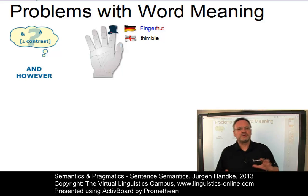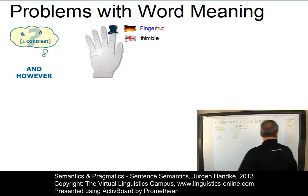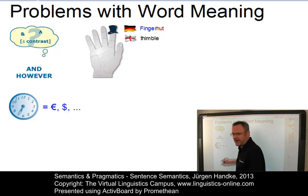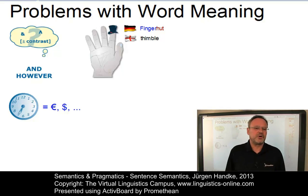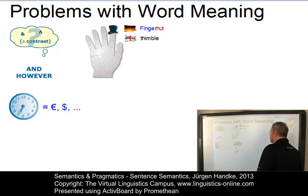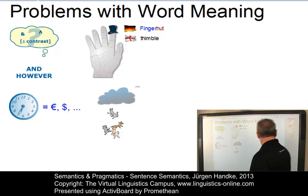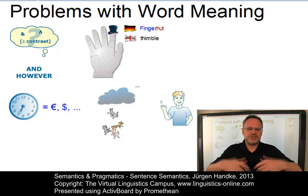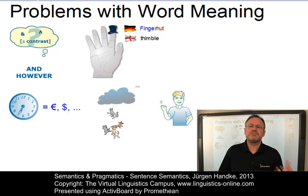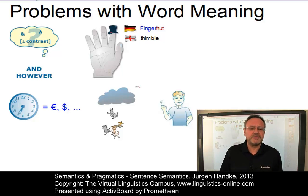Furthermore, there are numerous sentences whose meaning cannot be defined on the basis of the meaning of their words. In metaphors such as 'time is money', for example, the words involved do not reflect the overall meaning. The same applies to idiomatic expressions such as 'it is raining cats and dogs.' And often, paralinguistic features such as gestures, facial expressions, etc., accompany the uttering of linguistic constructions and influence their meaning. For this reason, semantics is not confined to word meaning but should incorporate the meaning of sentences as well.